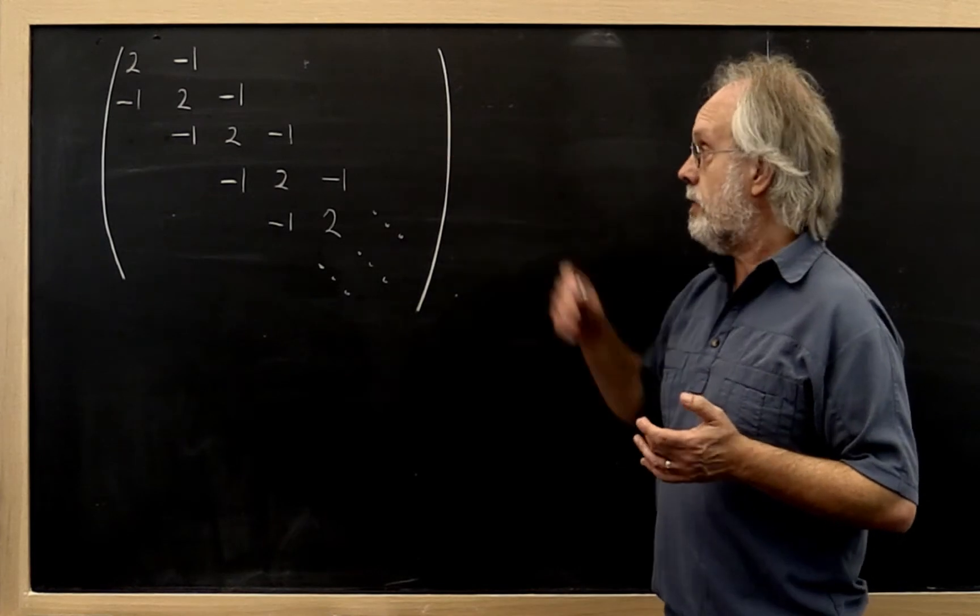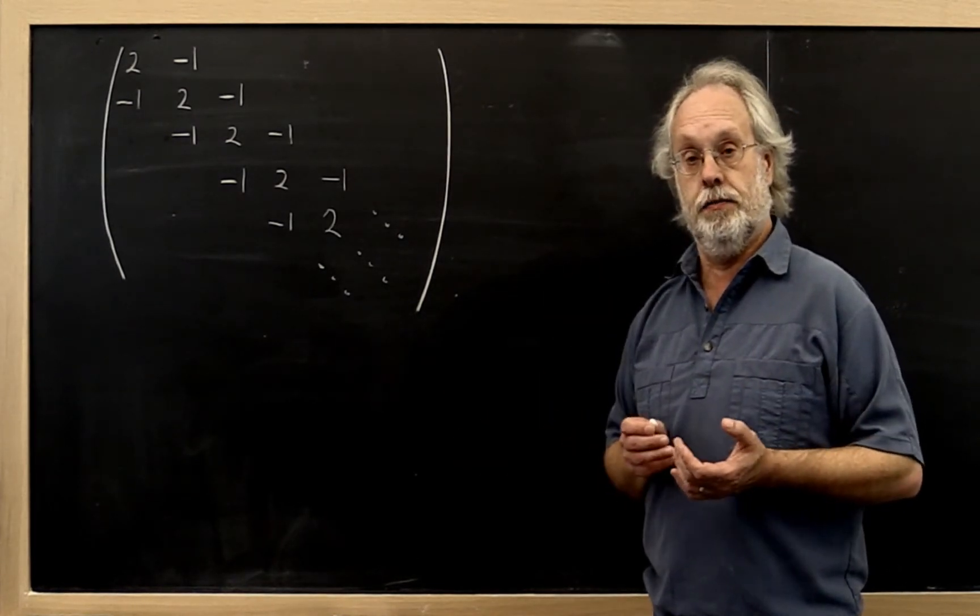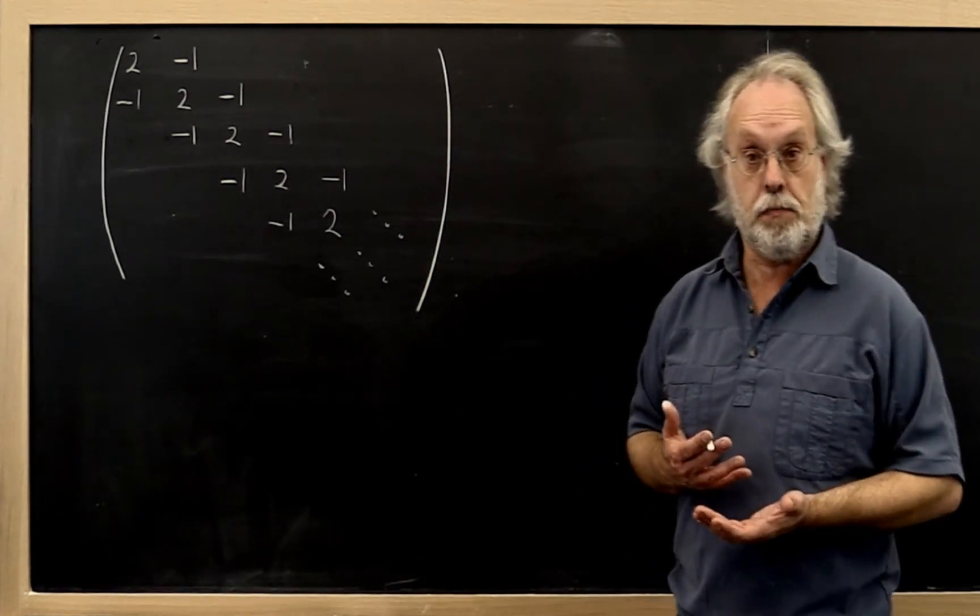Now you would think that there are enough zeros in this matrix that one should be able to take advantage of it. So therefore, maybe this is a sparse matrix.